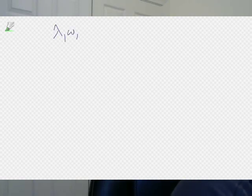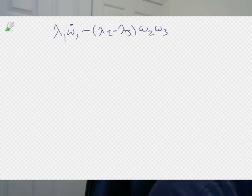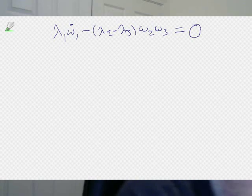How can we understand this? Let's start with the omega-1 equation from Euler's equations: lambda-1 times omega-1-dot minus (lambda-2 minus lambda-3) times omega-2 times omega-3 equals zero, because that was a freely falling object with no torque on it. Ideally I'd do this in deep intergalactic space so it just hovers there, but freely falling is just as good — as general relativity tells us.